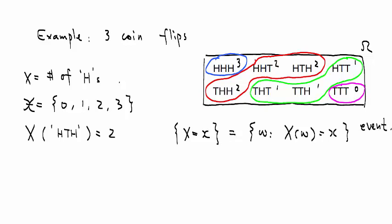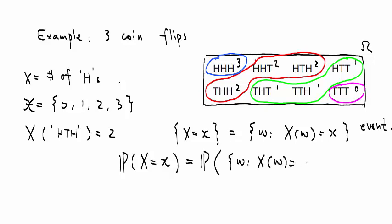A set of outcomes is an event. And because of that, we can actually define the notion of probability that X equals x. That is the probability of the collection of omega such that the label of that outcome equals x. So if x equals 2, this is just the probability of those outcomes — that equals 3/8.